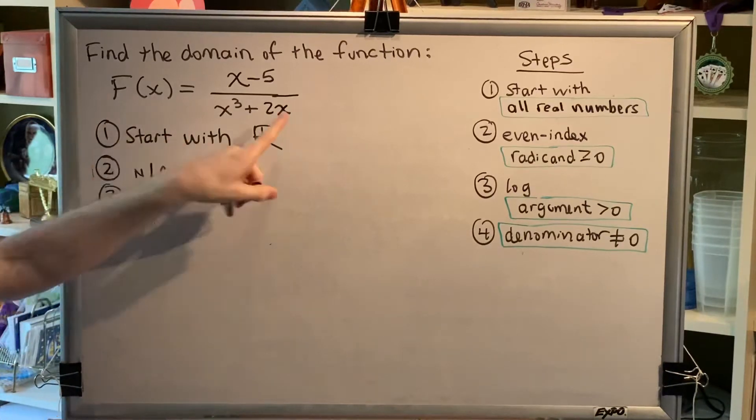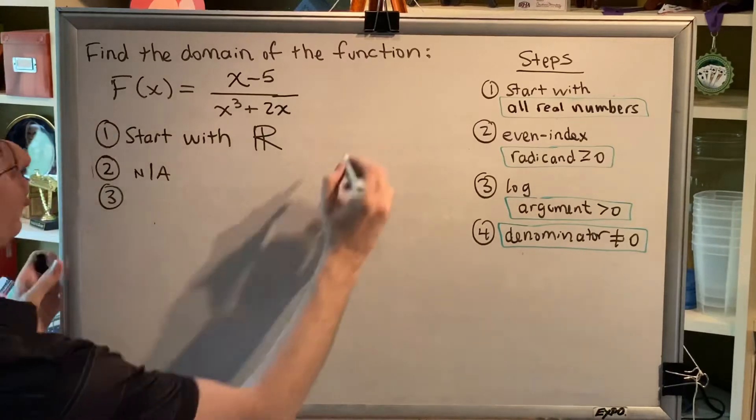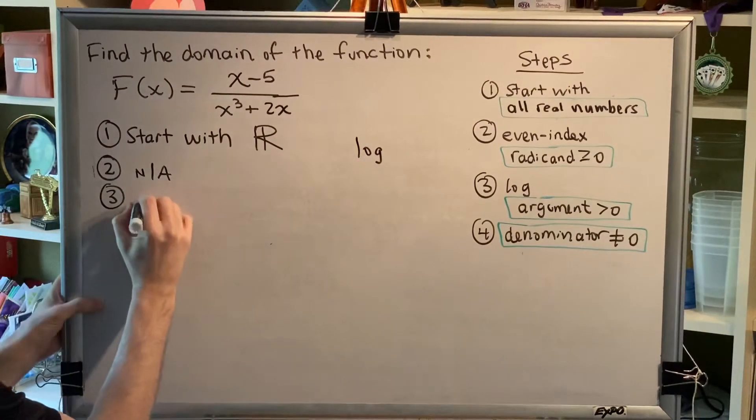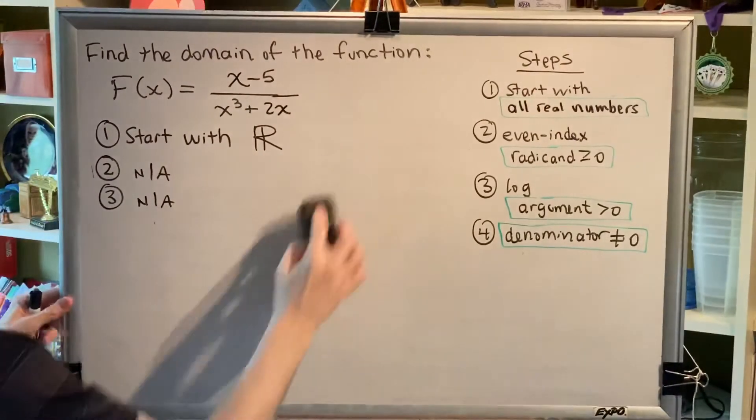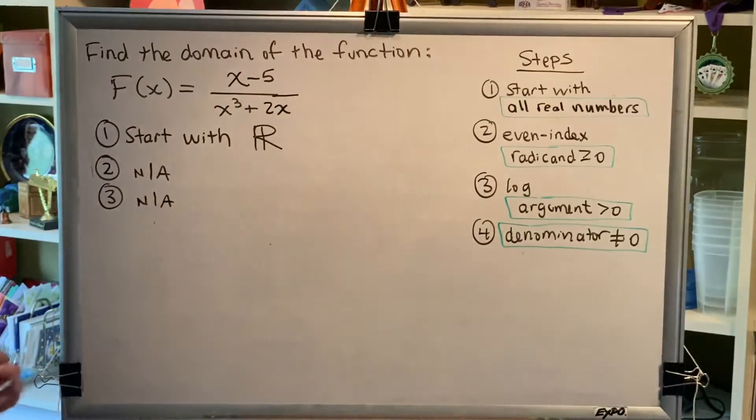Step 3 says log arguments. I haven't taught you logarithms yet, but if there were any logarithms in here, you would literally see the word log. And since that's not in this problem, this step is not applicable. Which means, once again, we haven't removed any numbers, and so at the end of step 3, our domain is still all real numbers.